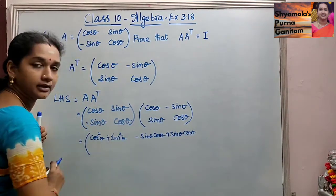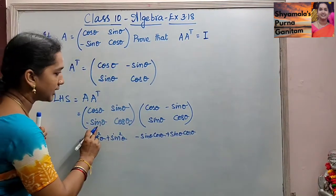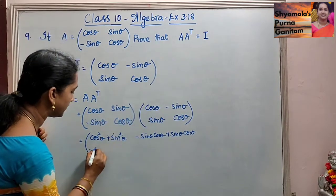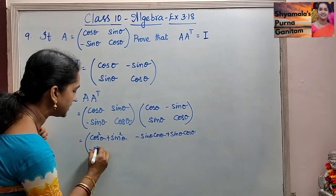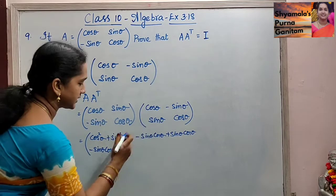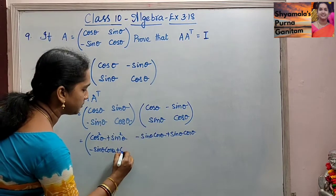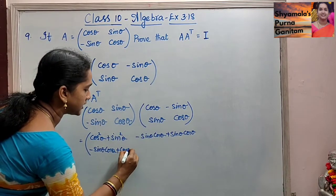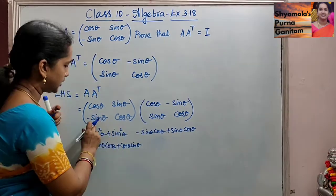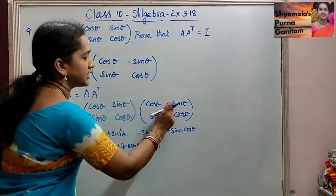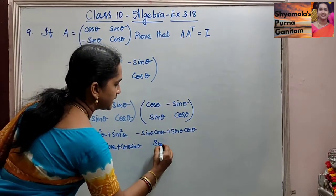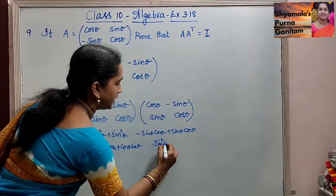Then for the second row: -sin theta × cos theta = -sin theta cos theta, and cos theta × sin theta = +cos theta sin theta. Then -sin theta × -sin theta = sin² theta.